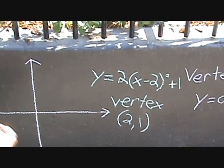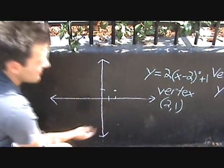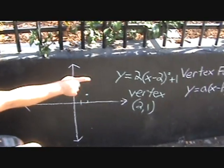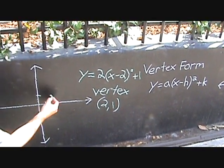So to graph this, we find 2, 1 on the graph. And by looking at that a is positive here and it's 2, we know it's narrower than the mother function and it points up.